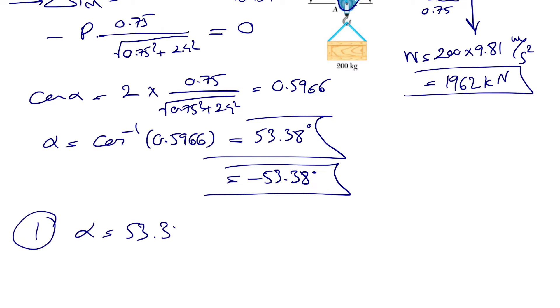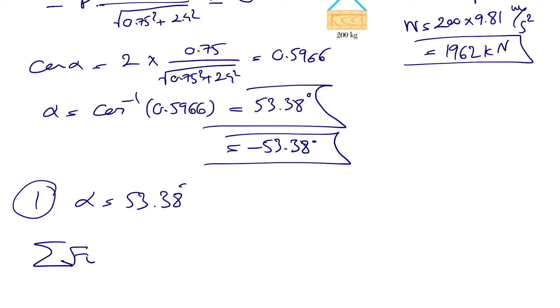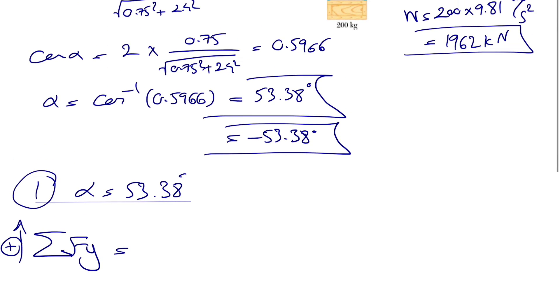So we have two conditions in here. In one condition we can consider alpha 53.38 degrees. If we go with this one, we can move on to our sum of all forces in y direction.